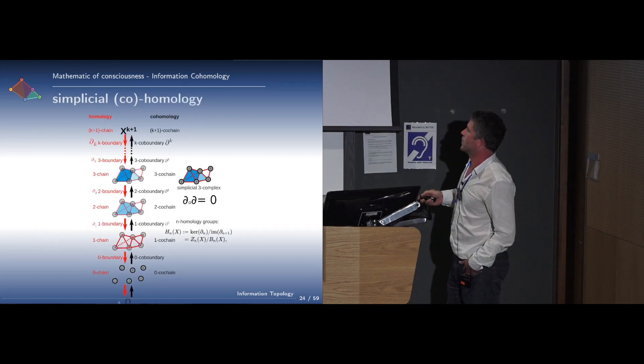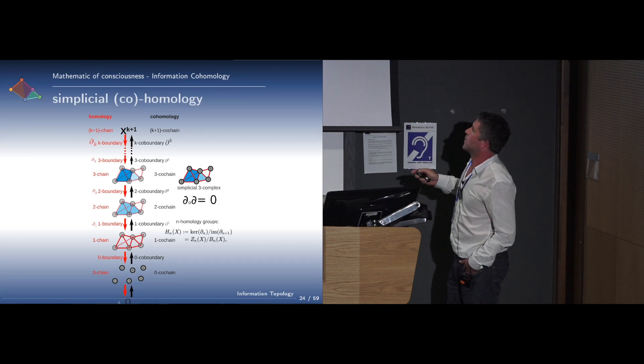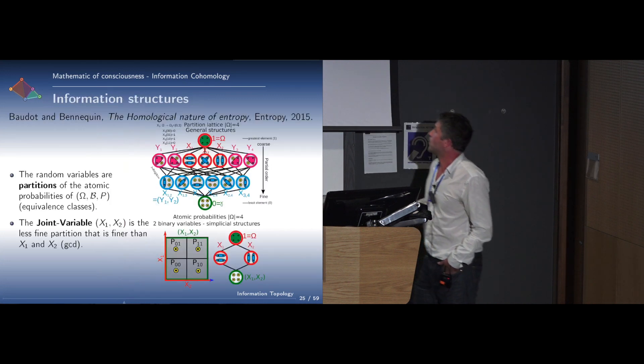Homology is a chain complex with a boundary, which is defined by the boundary of a boundary equals zero. The boundary is usually a differential operator that goes from one dimension to a higher dimension, and the cohomology goes in the opposite sense. It's a kind of decomposition.